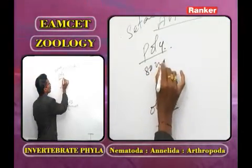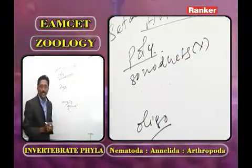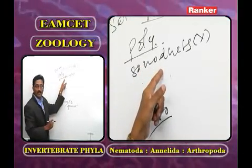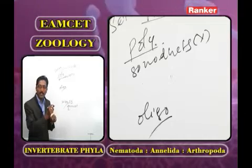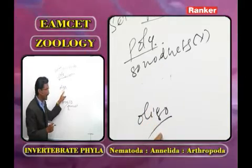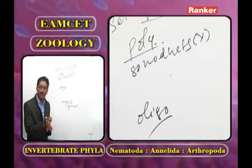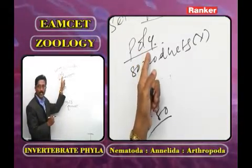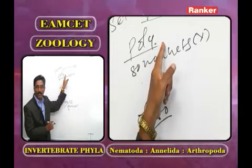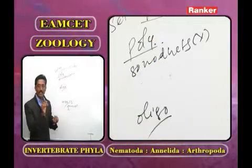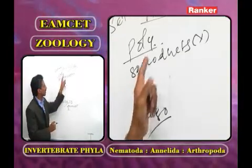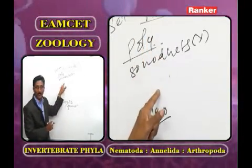In Polychaeta, gonoducts (vasa deferentia and oviducts) are totally absent; gametes are released into marine water through metanephridia. In Oligochaeta and Hirudinea, gonoducts and gonopores are permanent. In Polychaeta, development occurs outside the body in marine water, with the trochophore larva present. Examples of Polychaeta include Nereis, Chaetopterus, and Eunice.